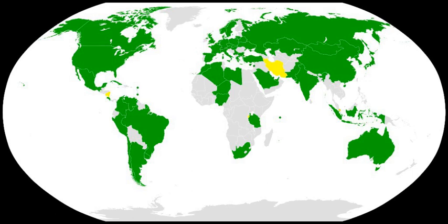The Convention on Registration of Objects Launched into Outer Space, commonly known as the Registration Convention, was adopted by the United Nations General Assembly in 1974 and went into force in 1976. As of December 2018, it has been ratified by 69 states. The convention requires states to furnish the United Nations with details about the orbit of each space object.